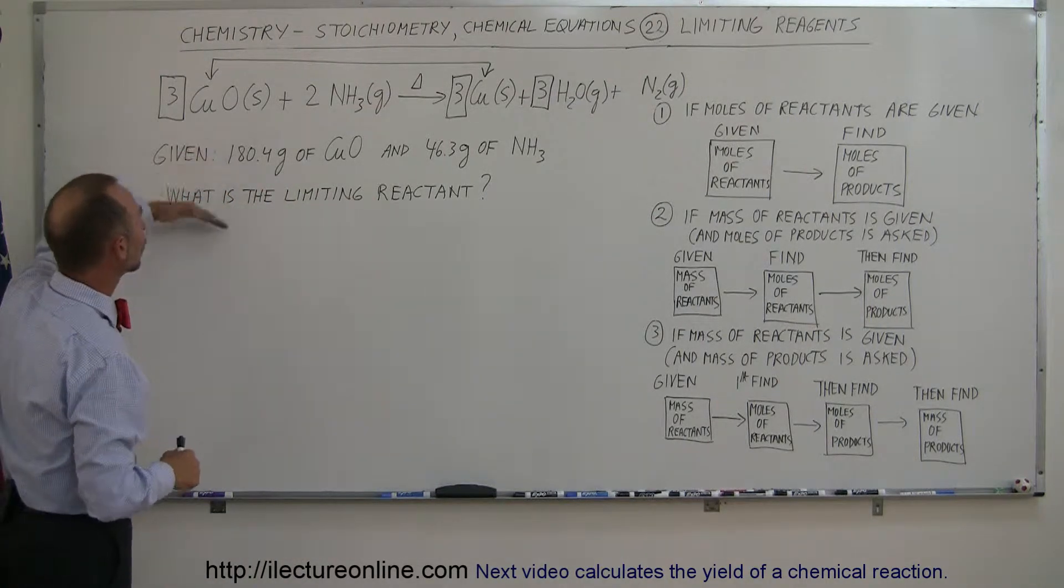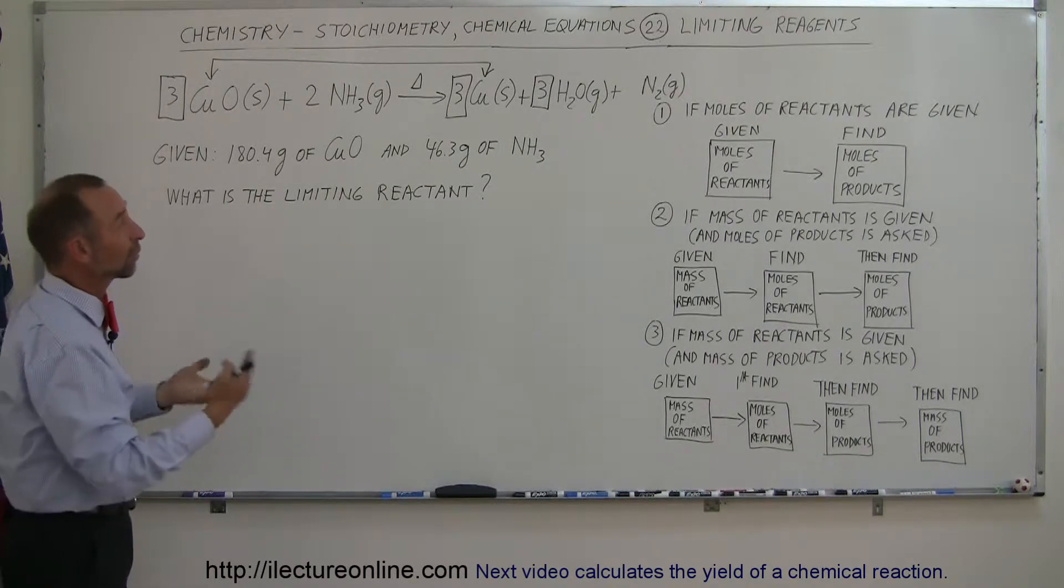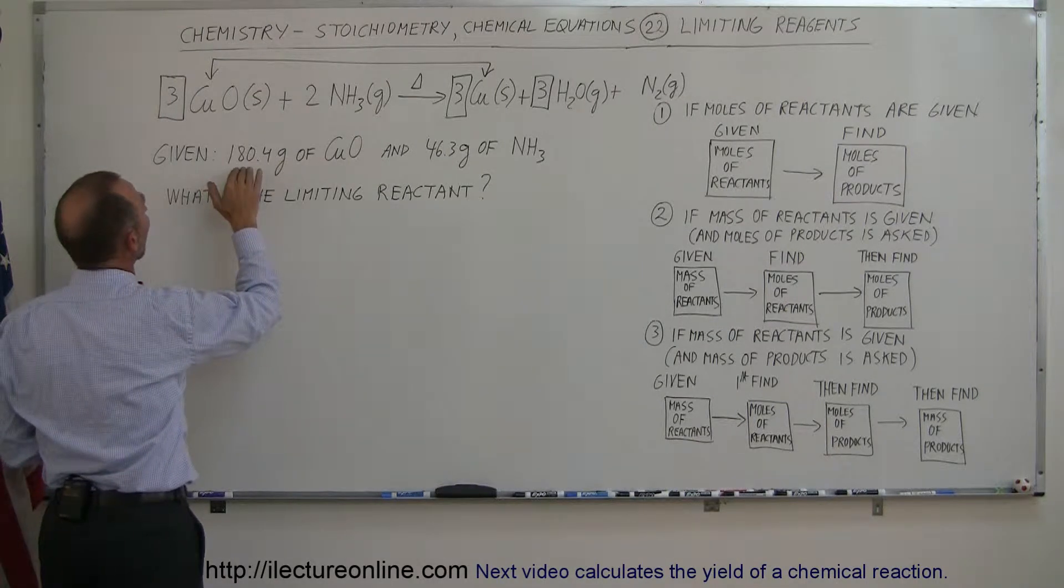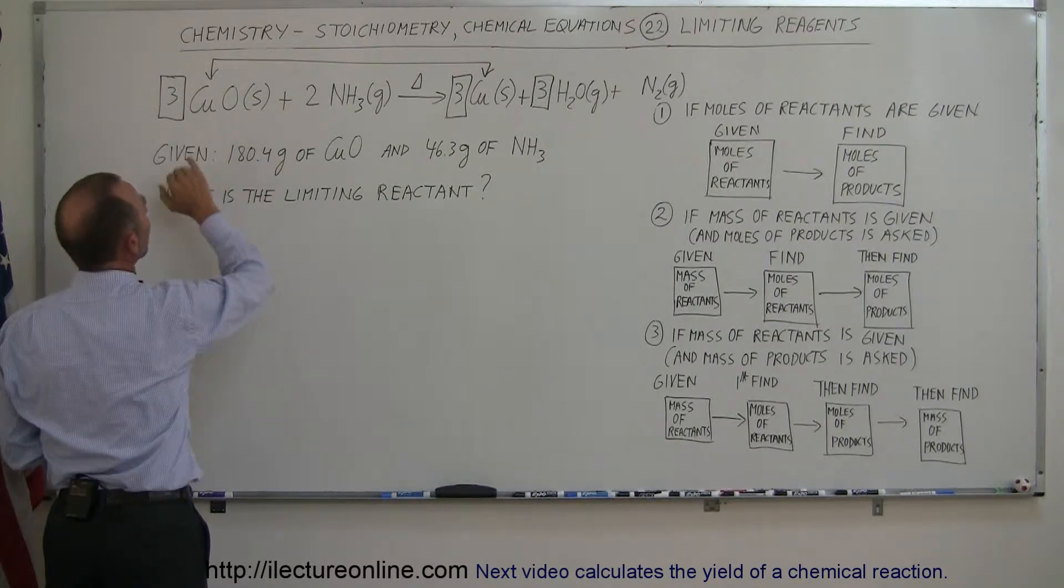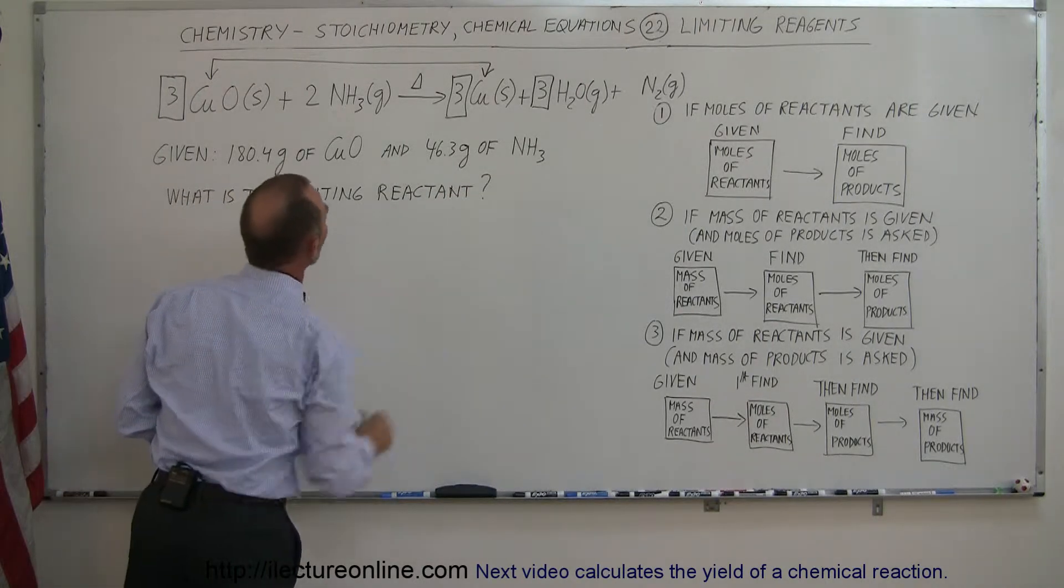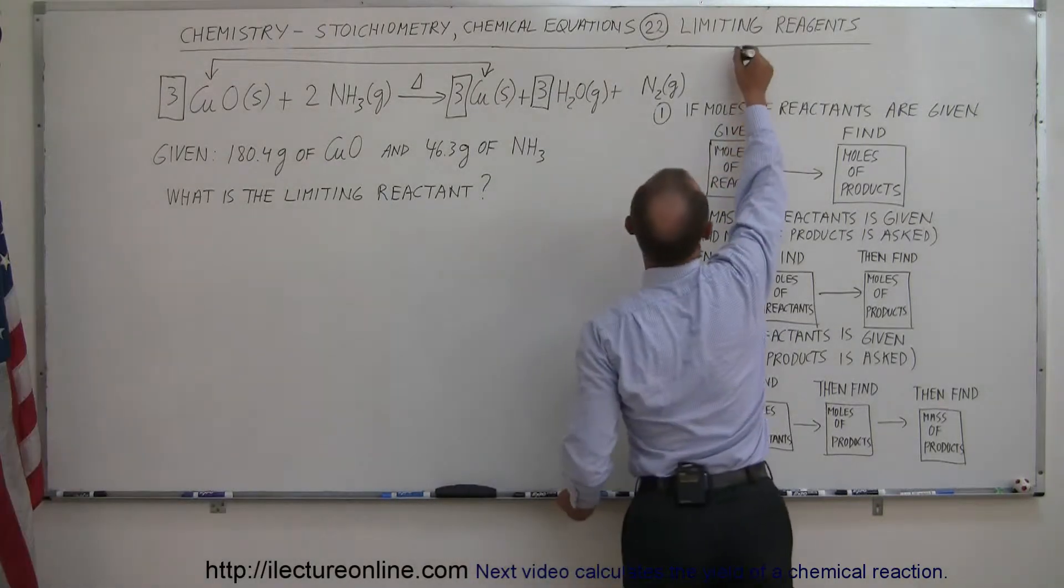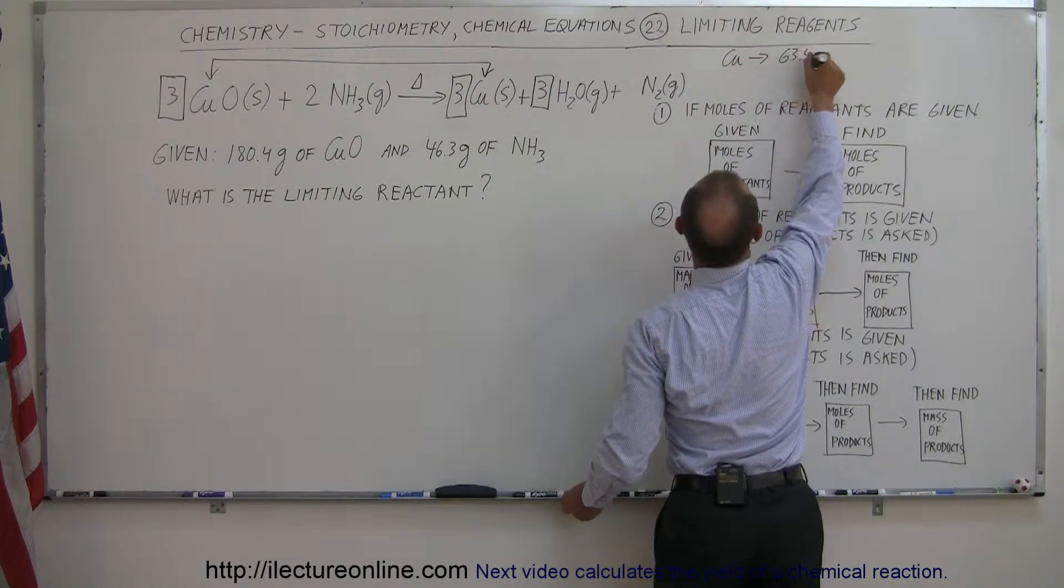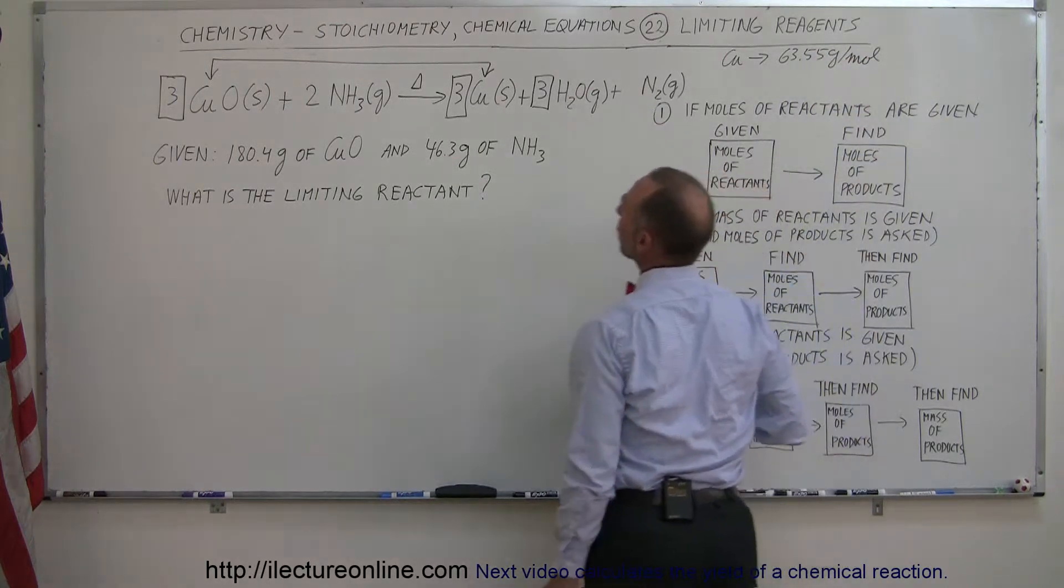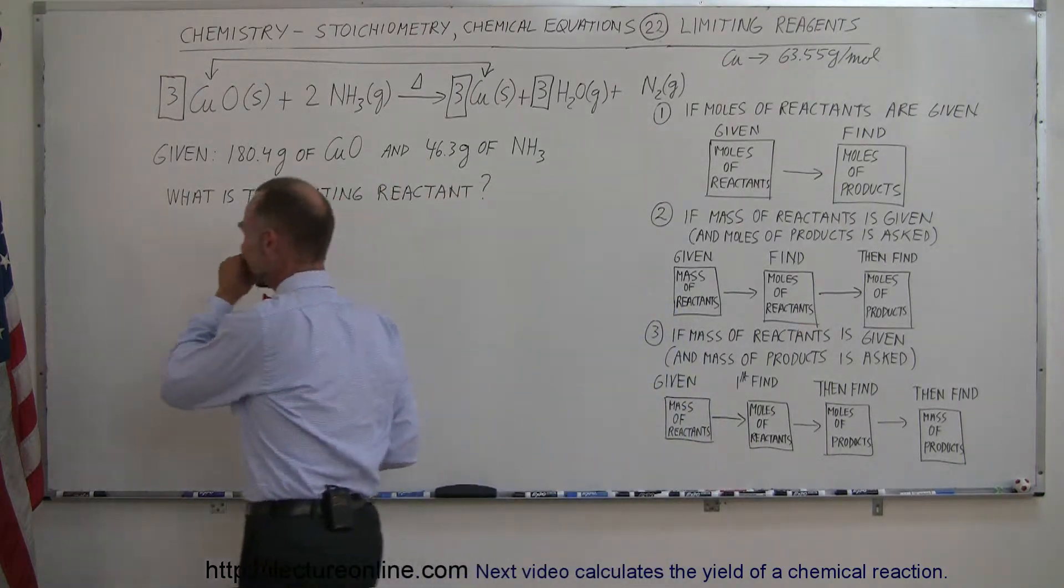So now the next step: which of these two will be the limiting reactant or reagent? Let's find out how many moles of copper oxide we have and how many moles of ammonia we have. For that we need to know the mass of copper. We have copper that is 63.55 grams per mole. We know nitrogen, hydrogen, oxygen. We're ready to start.